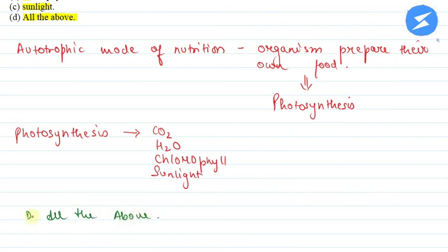What do we require for plants to make food through photosynthesis? Carbon dioxide, water, chlorophyll, and sunlight - all are required. I hope this explanation is understood to you. Thank you.